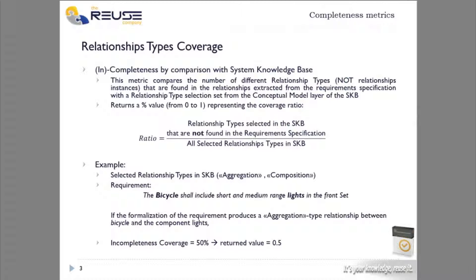The goal of this metric is to provide means for checking that requirements specification is aligned with the relationship types that we want to have. With this metric we can compare the number of different relationship types found in the requirements specification against the selected ones in our metric configuration. This metric returns a value from 0 to 1 calculated from relationship types selected in the system knowledge base among all selected from our metric.